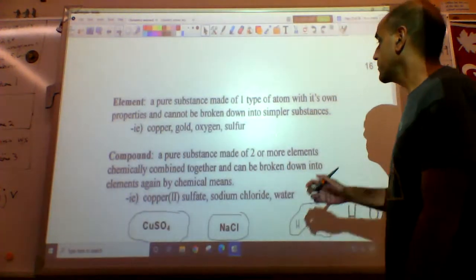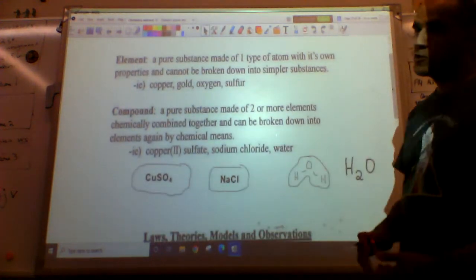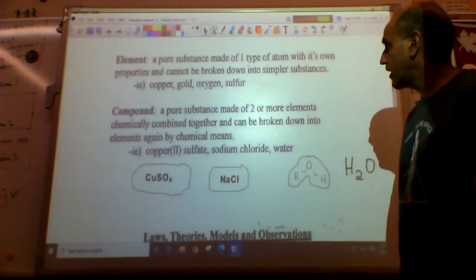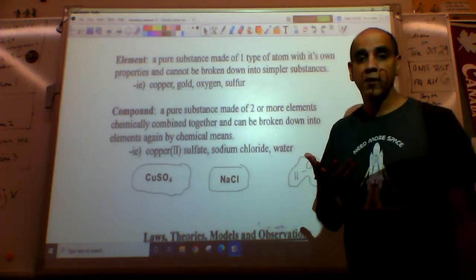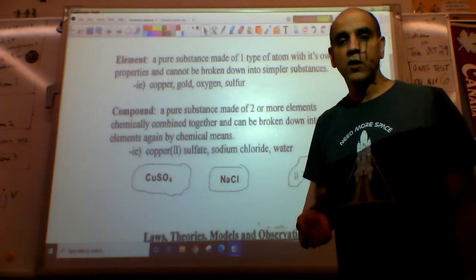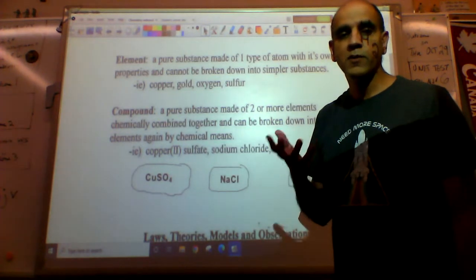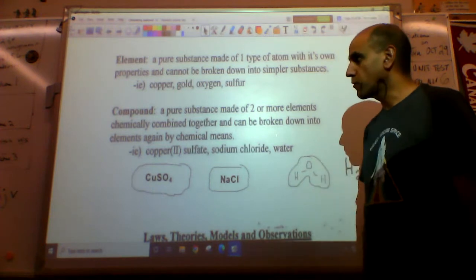An element is a pure substance made up of one type of atom with its own special properties and cannot be broken down into simpler substances. Copper, gold, oxygen, sulfur - you have your own periodic table, so you have a list of all the elements. And by the way, for any quiz or test, you would always be allowed to use that table, of course.